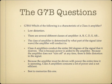Which of the following is a characteristic of a class A amplifier? The answer is low distortion. There are several classes of amplifier: A, B, C, D, and combinations like AB. The class is determined by what part of the signal's sine wave the amplifier conducts in. Class A amplifiers conduct the entire 360 degrees of the signal and never turn off. This means very little distortion, but because they must be driven with power the entire time, class A amplifiers consume a lot of power and are not efficient.